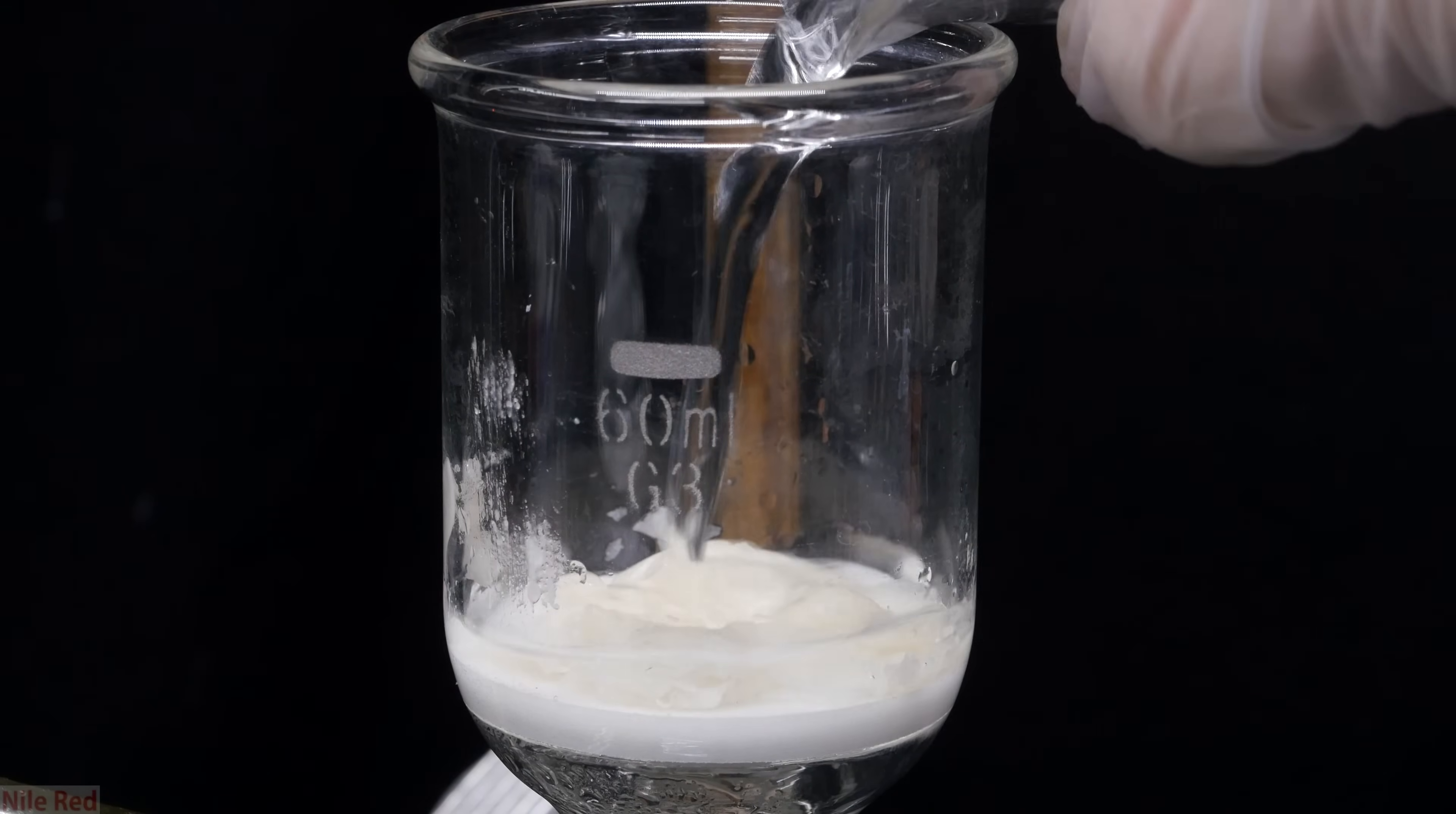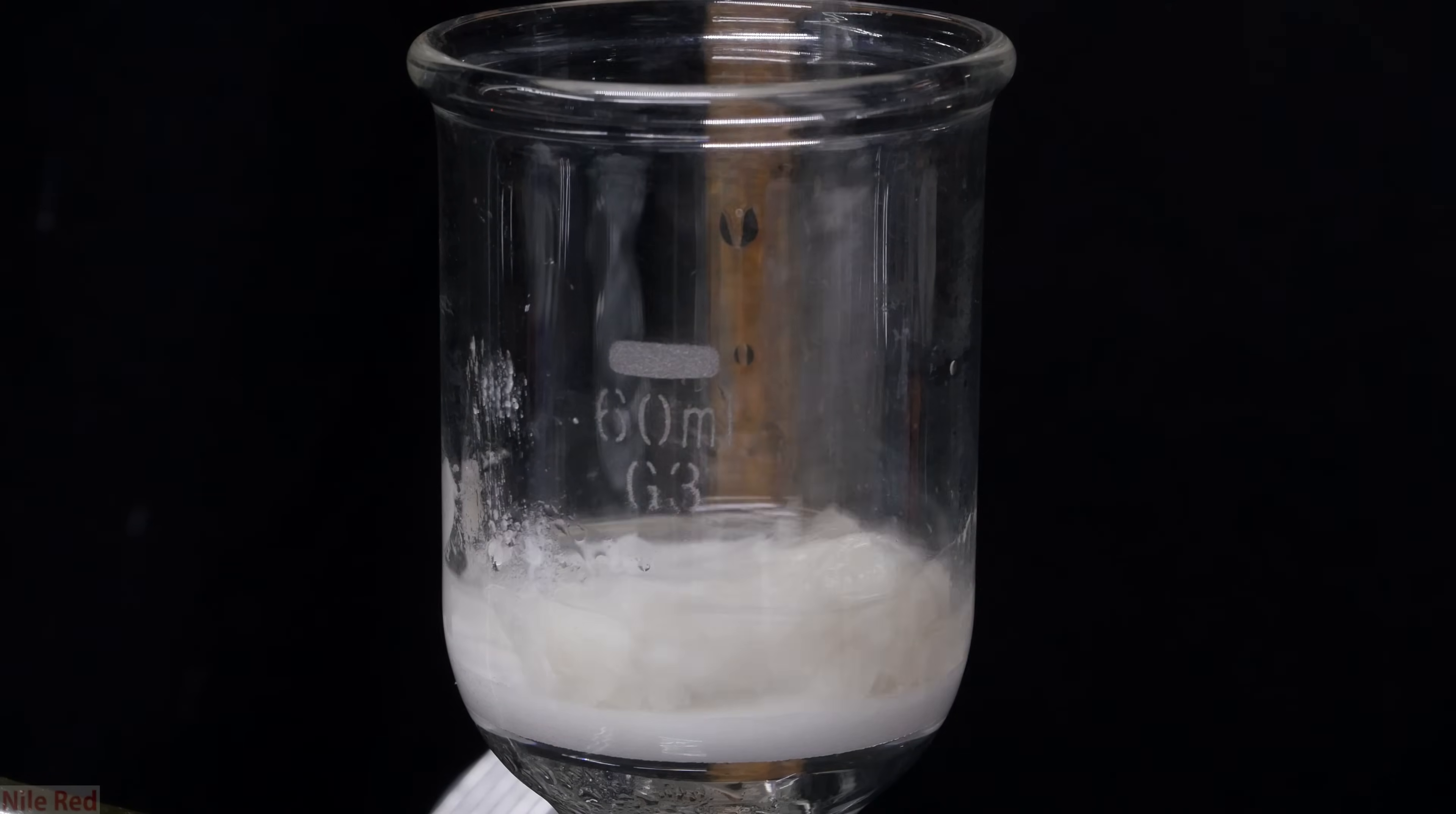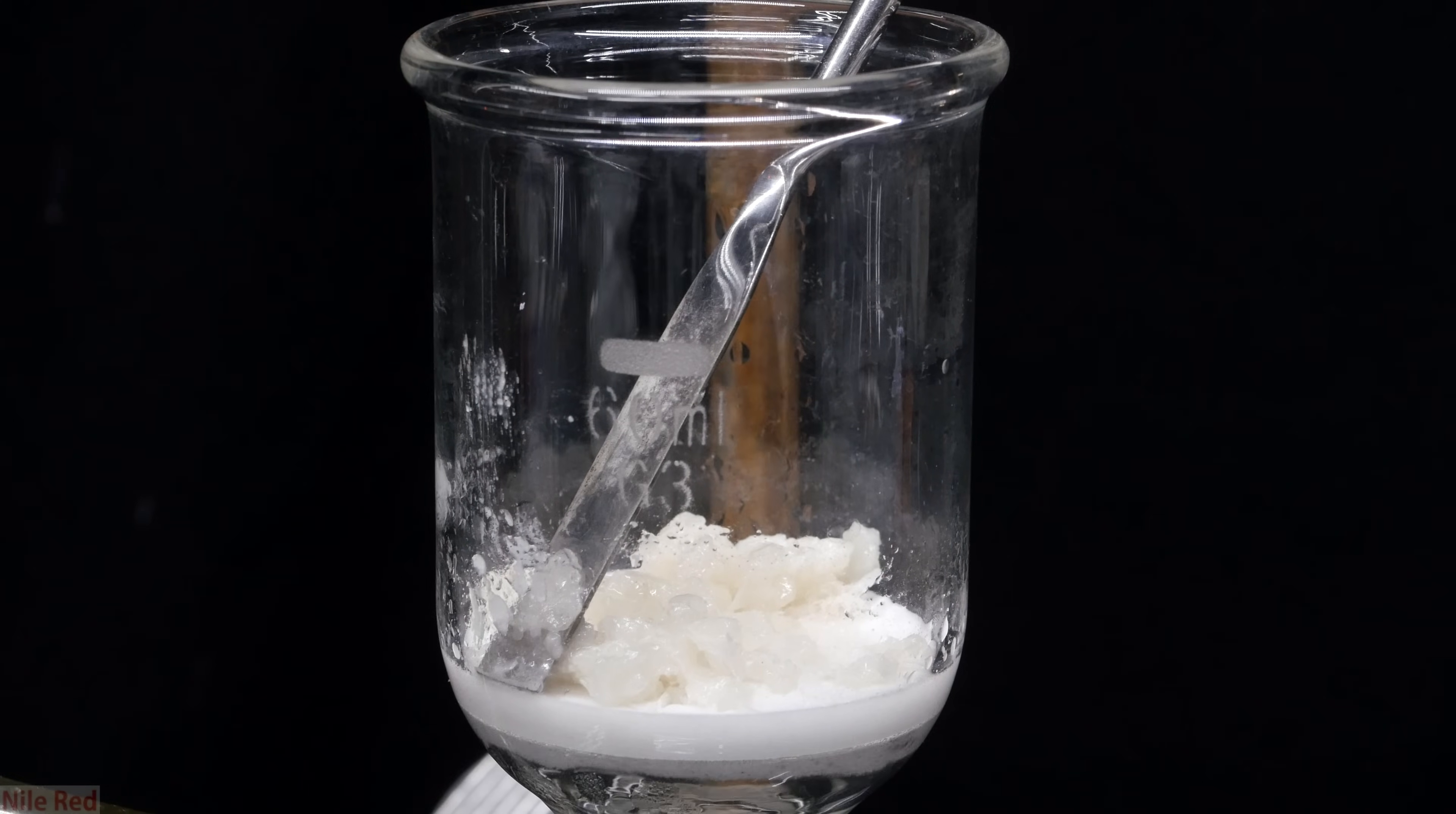Once all the water was removed, a little bit more water was added to wash it. I then use a spatula to mix it up a little bit and try to get it as clean as possible. The vacuum's turned on and the water's removed, and I leave it on for a bit to try to dry things up.